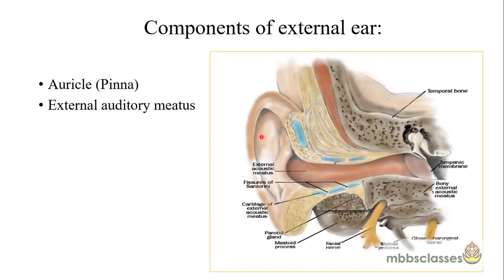The external ear is composed of two components. As you can see in this diagram, this is the pinna or the auricle, which is attached to the side of the lateral part of the head by muscles and ligaments. The second component of the external ear is the external auditory meatus, which is in continuation with the pinna, starting at the concha and extending up to the tympanic membrane.